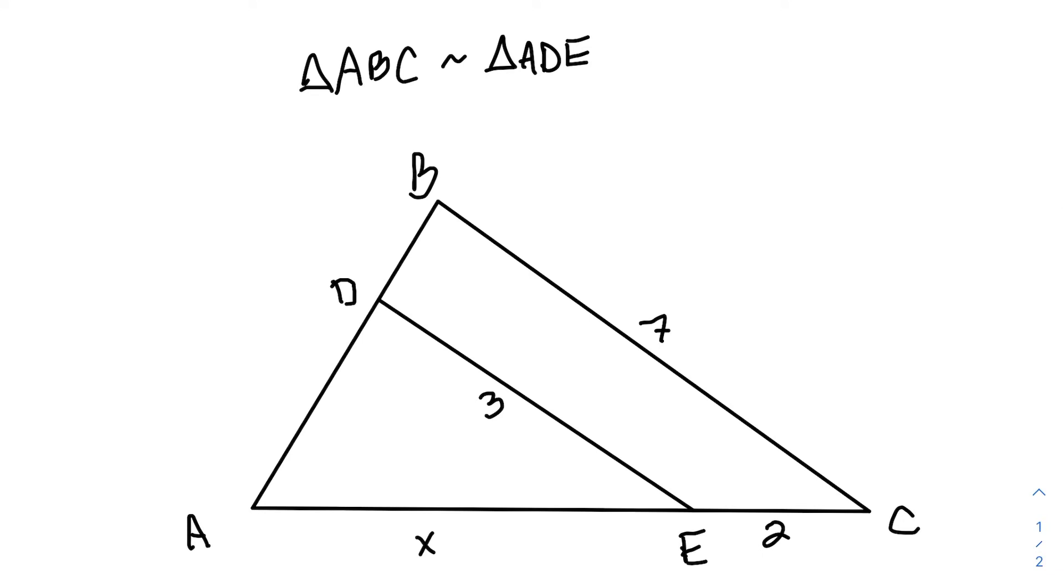So at the top here, it says triangle ABC is similar to triangle ADE. And first, let's talk about what it means for two triangles to be similar. What that means is that the corresponding sides are going to be proportional.